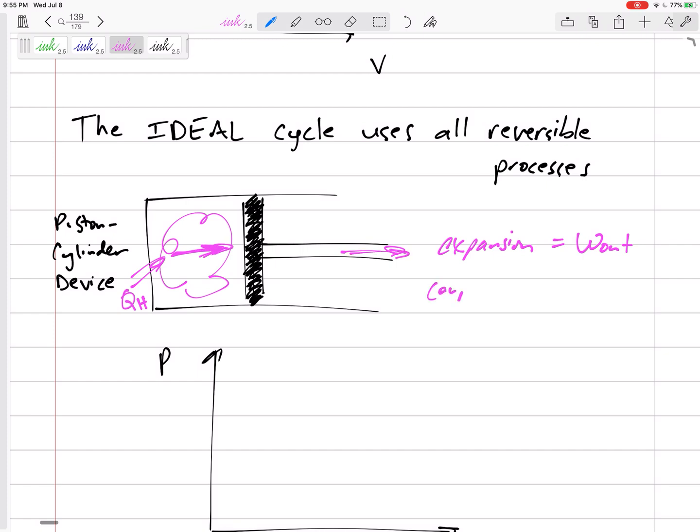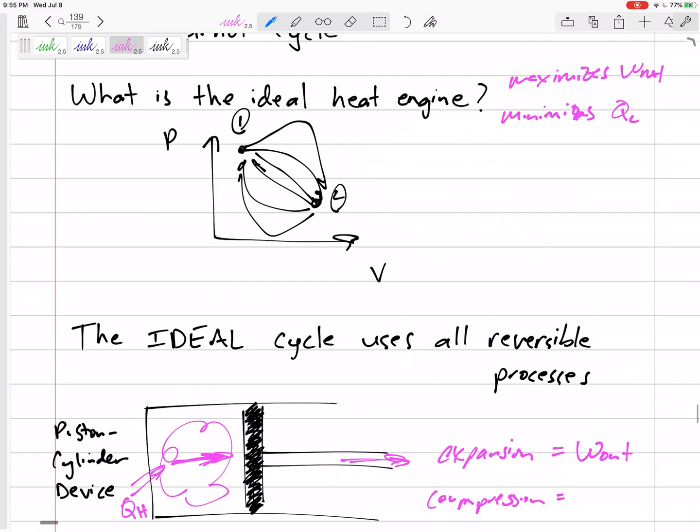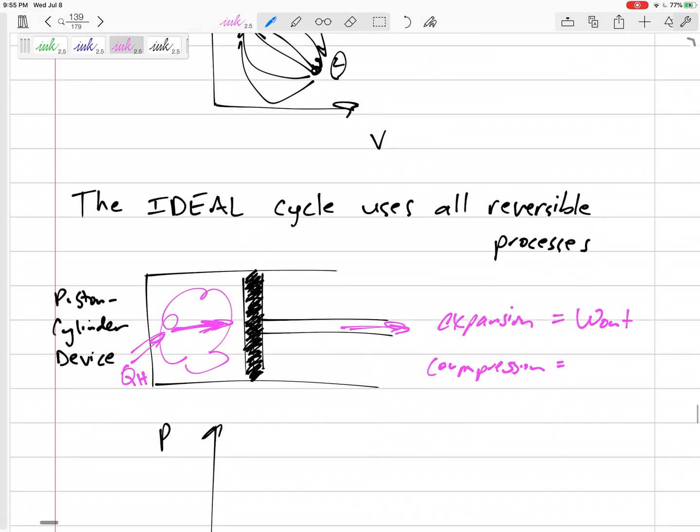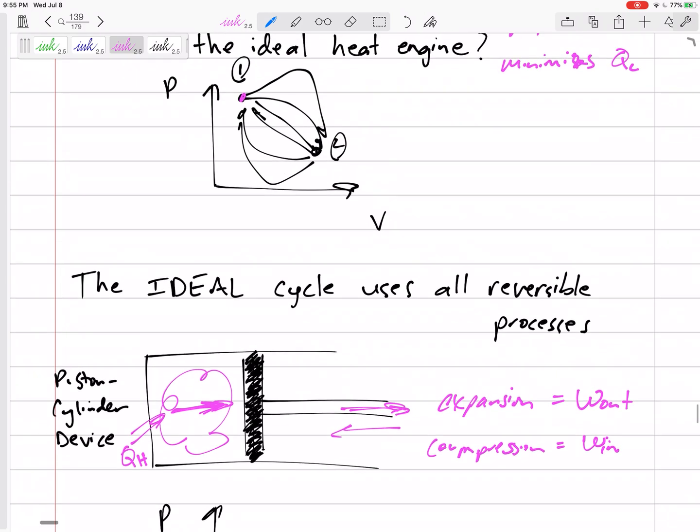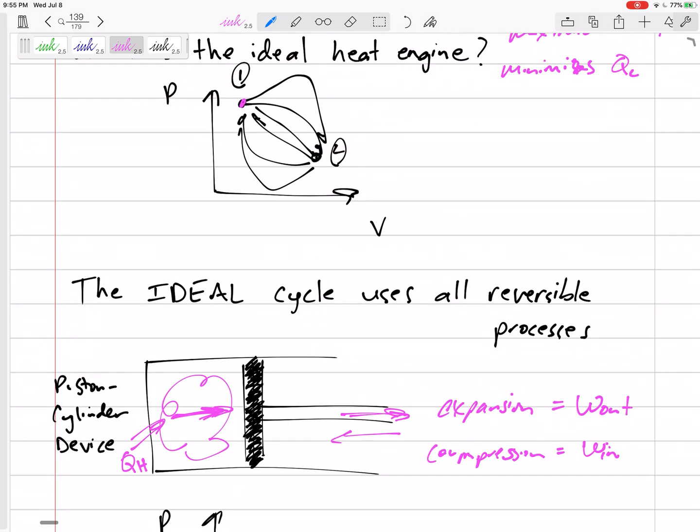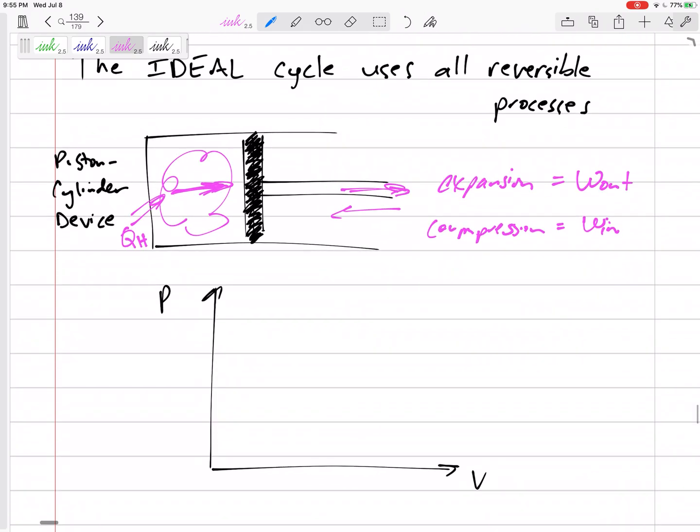But we need to get it back to its starting state, get it back to state 1. And so the compression, when we push it back, that's the work in. But hopefully the work out is greater than the work in so that we can get some net work, W net.